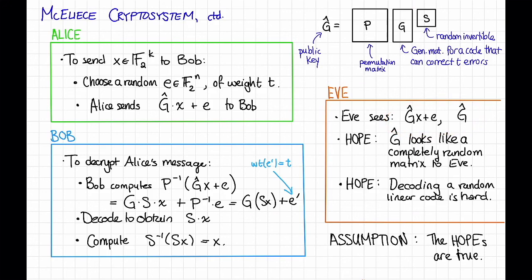This is a pretty common situation in cryptography. Typically in cryptography, one has to assume that certain problems, like factoring or something like that, are computationally difficult. For this particular scheme, this is the assumption that we're making.